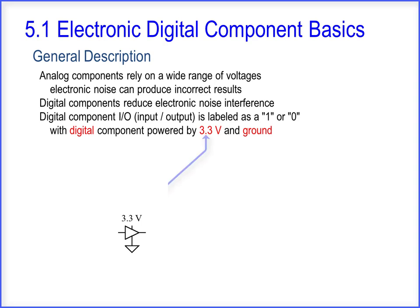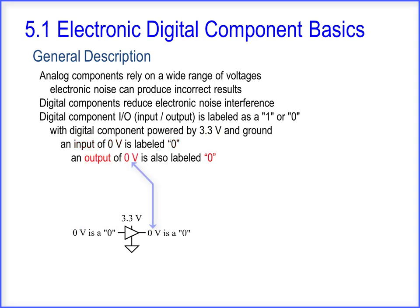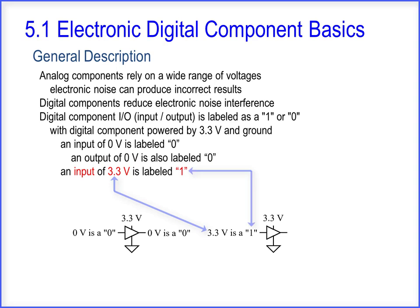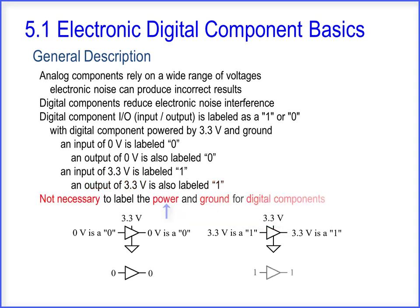With a digital component powered by 3.3 volts and ground, an input of 0 volts is labeled 0, and an output of 0 volts is also labeled 0. An input of 3.3 volts is labeled 1, and an output of 3.3 volts is also labeled 1. It is not necessary to label the power and ground for digital components.